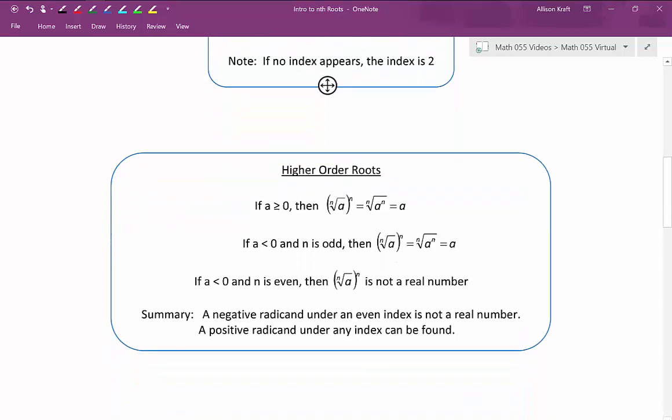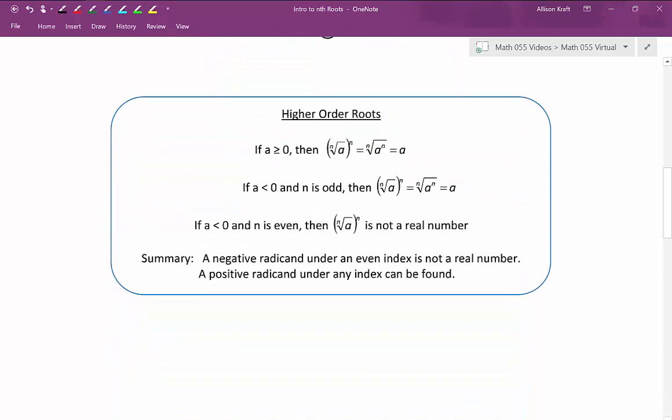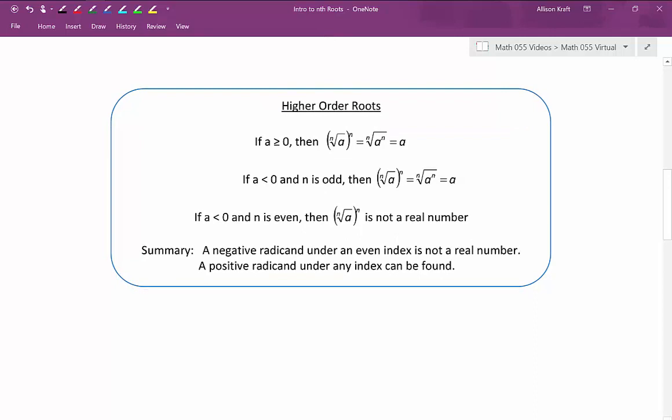So let's talk about some of the rules of these higher order roots. If a, our radicand, is greater than or equal to 0, then the nth root of a to the n is equal to just a. Essentially, what's happening is the index and the power cancel each other out, leaving us with whatever's underneath. You could either have the exponent on the inside or the outside and it has the same effect. This is true if your radicand is greater than or equal to 0.